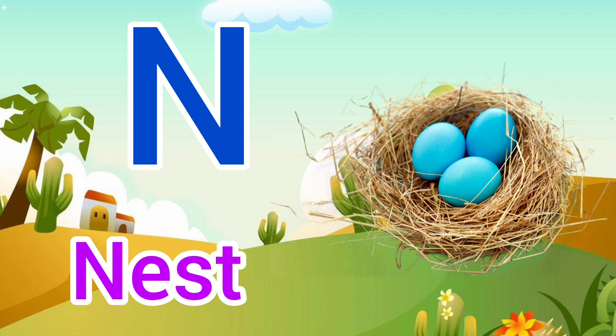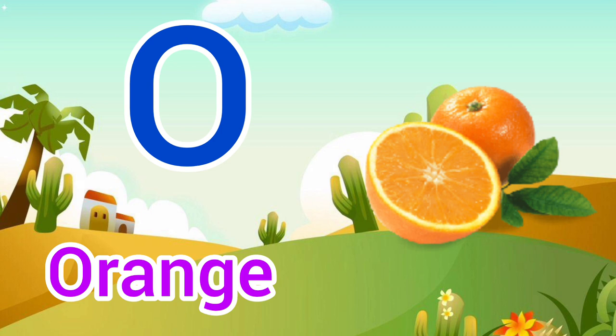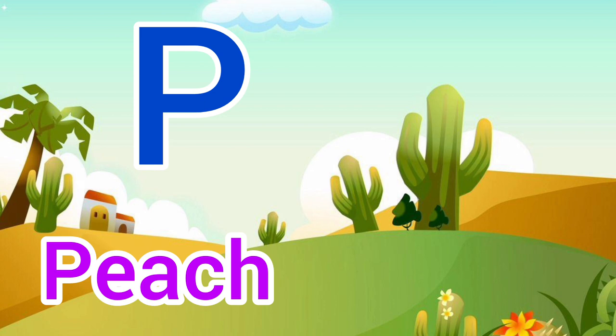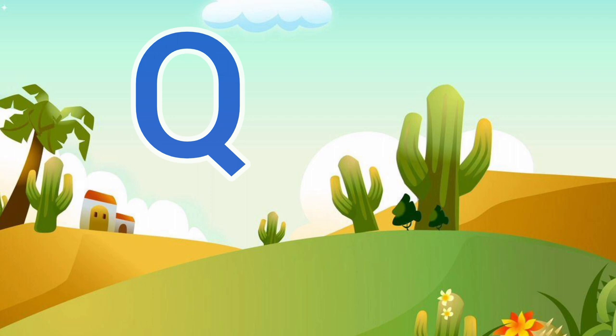O. O for Orange, Orange means Santara. P. P for Peach, Peach means Aadhu.